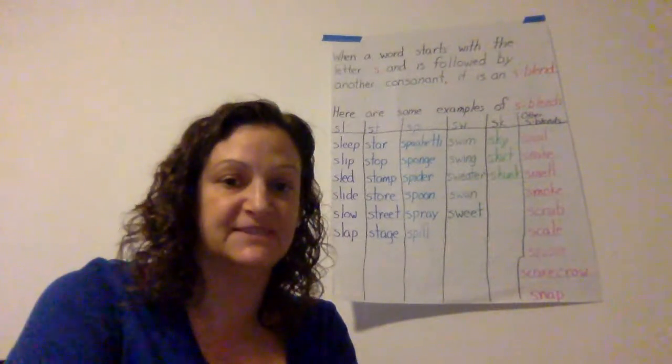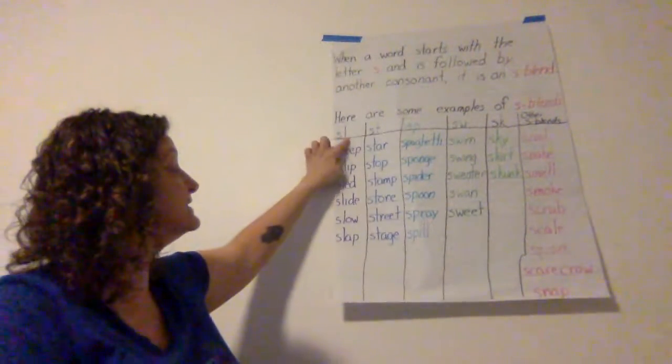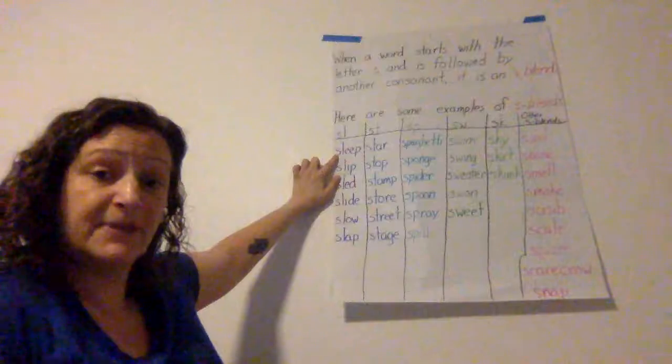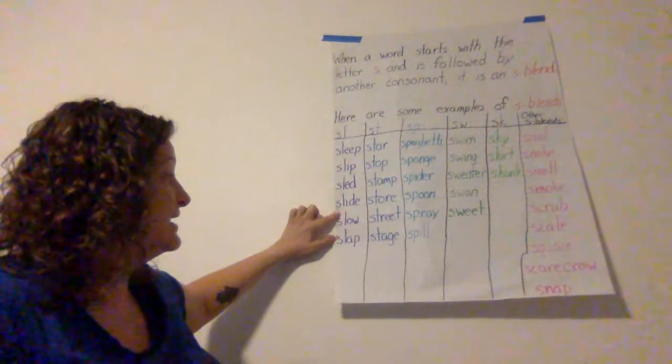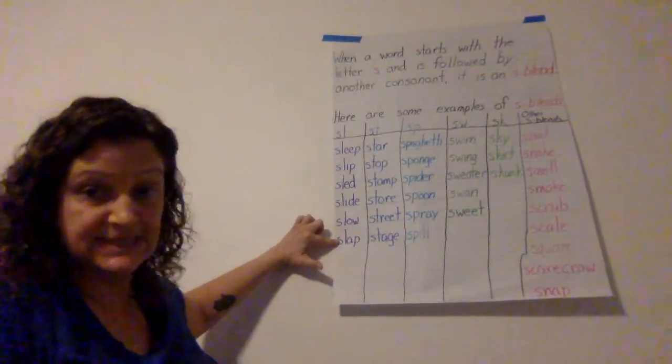And here are some examples of s-blends. SL we have sleep, slip, sled, slide, slow, and slap.